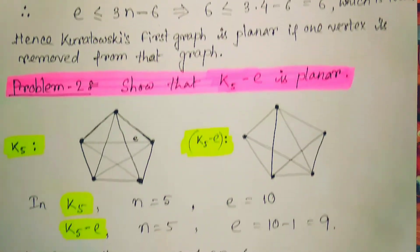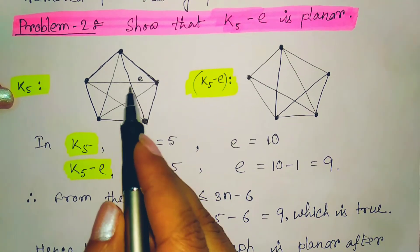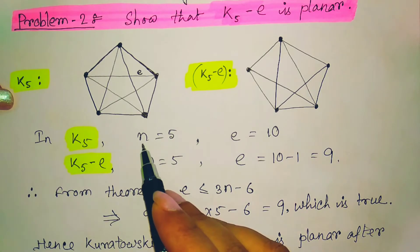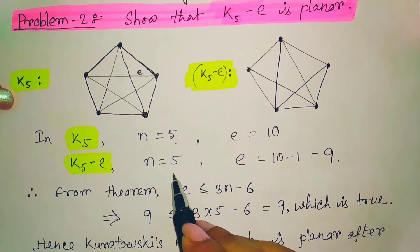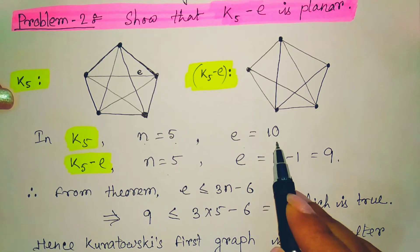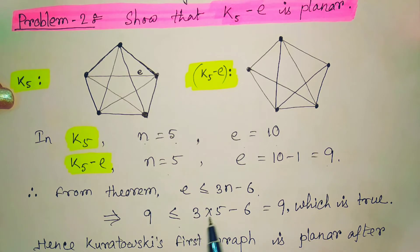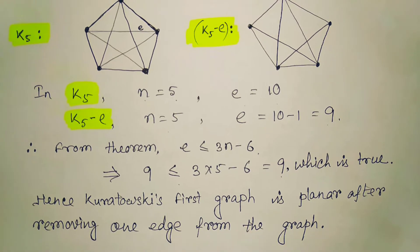If we remove one edge from Kuratowski's first graph, the reduced graph K5 minus an edge has N equals 5 vertices and E equals 9 edges. According to Theorem 3, E ≤ 3N − 6, substituting gives 9 ≤ 3(5) − 6 = 9, which is true. Hence Kuratowski's first graph is planar if one edge is removed; otherwise it is a non-planar graph.